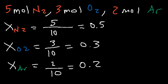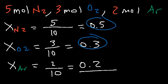Out of a sample of a hundred molecules, 20 would be argon, 30 would be oxygen, and 50 would be nitrogen gas. If we add up all the mole fractions — 0.5 plus 0.3 plus 0.2 — the total mole fraction equals one, because one is the decimal form of a hundred percent.